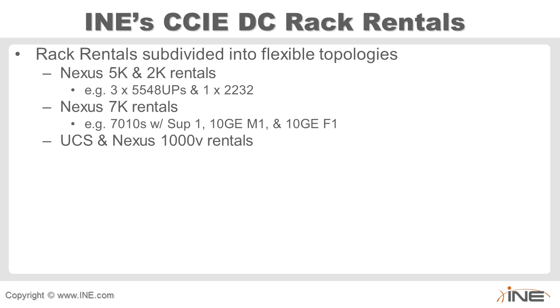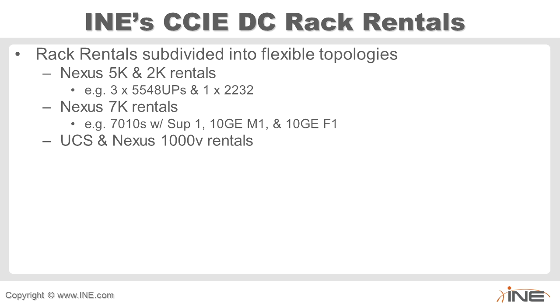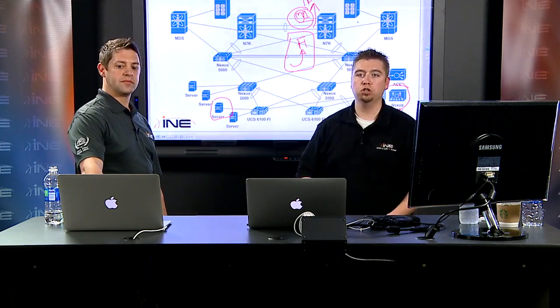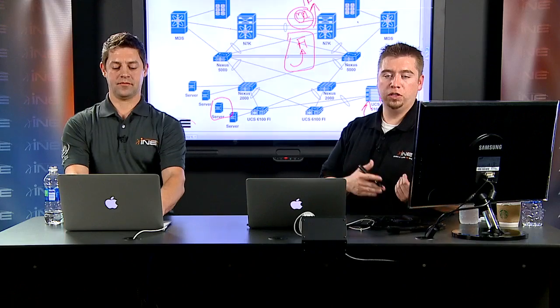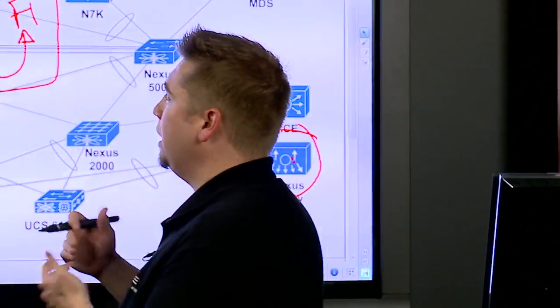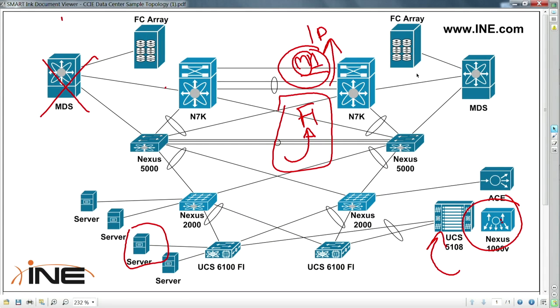We'll also have access to the UCS chassis and Nexus 1000v, because since the 1000v runs as a virtual machine, you need a server to actually run it on — and UCS is the perfect platform for that. This could be with the B-series blade chassis or the C-series standalone 1U/2U servers. We'll have access to both. For storage, MDS will be included. There are designs where you could theoretically remove MDS entirely — using only FCoE or iSCSI — but MDS is still important to the vast majority of designs.